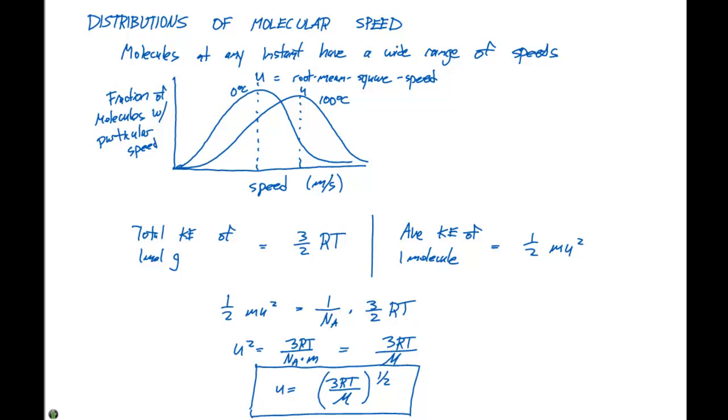And notice that as the molar mass increases and gets larger, our speed is going to decrease. So this is telling us and showing us that the larger the molecule is, the slower that it's gonna move, or the lower the root mean square speed it's gonna have.